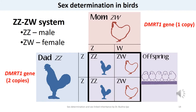In birds, sex is determined by the Z and W chromosomes, and females are the heterogametic sex. Scientists working with chickens were unable to find a counterpart of the SRY gene required for mammalian testis determination, so they searched for homologues of other genes required for testis formation in mammals. These investigations led to the discovery of the DMRT1 gene on the chicken's Z chromosome. In mammals, the DMRT1 gene product is a critical member of the testis-forming pathway initiated by the SRY gene.